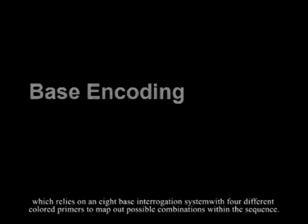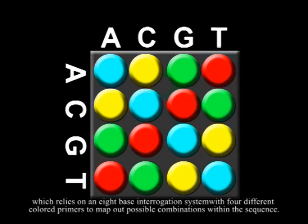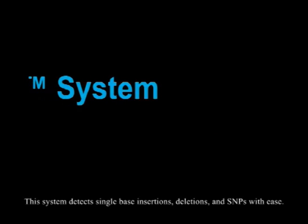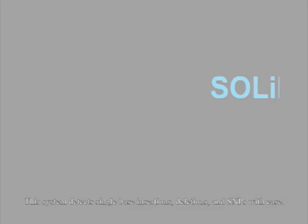Data analysis is accomplished through exact call chemistry, which relies on an eight base interrogation system with four different colored primers to map out possible combinations within the sequence. The system detects single base insertions, deletions, and SNPs with ease.